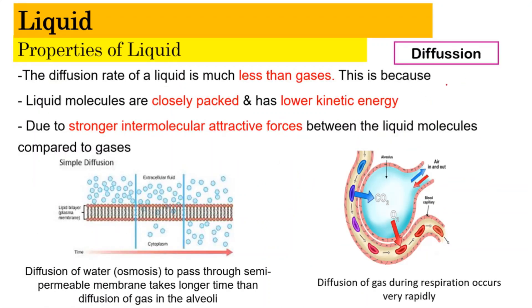Next is diffusion. The diffusion rate of a liquid is much less than that of gases. This is because liquid molecules are much more closely packed and have lower kinetic energy due to the stronger attractive forces between liquid molecules compared to gases. As a result, diffusion inside liquid takes longer in comparison to diffusion of gases, such as in the alveoli inside our lungs.